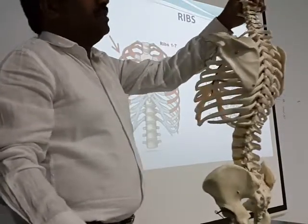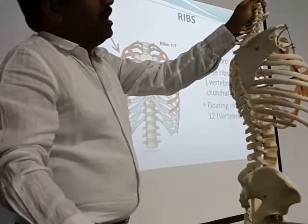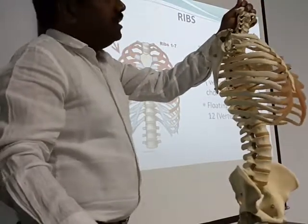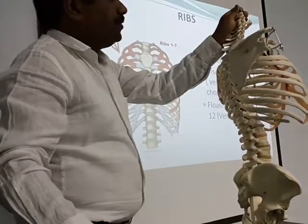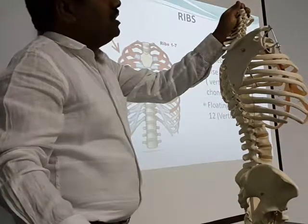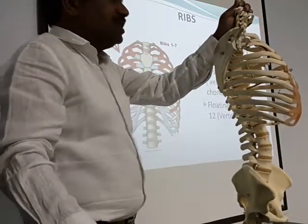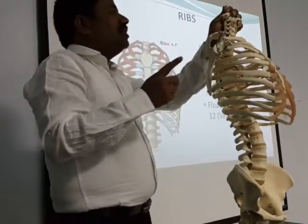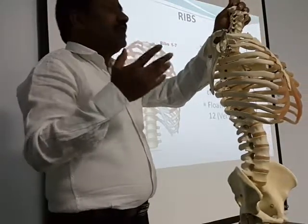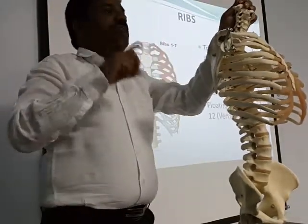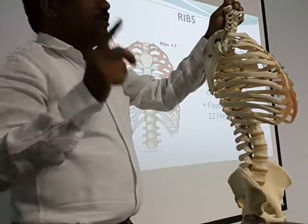Ribs are attached posteriorly to the vertebrae and anteriorly to the sternum, but not all ribs attach to the sternum. Only ribs one to seven are attached to the sternum. These are called true ribs — or vertebrosternal ribs — because they are attached posteriorly to the vertebra and anteriorly to the sternum.